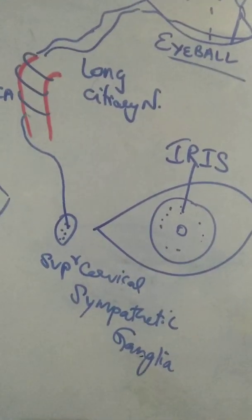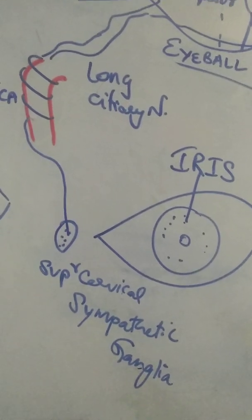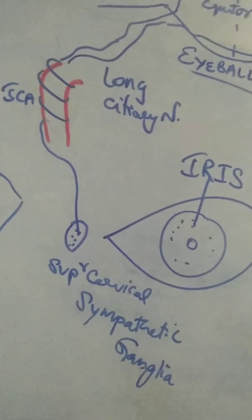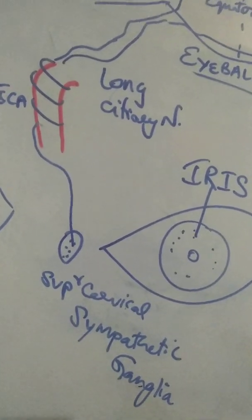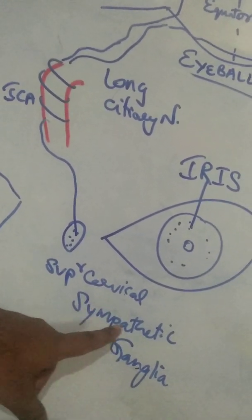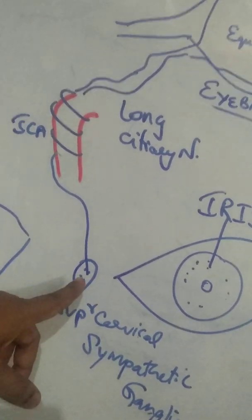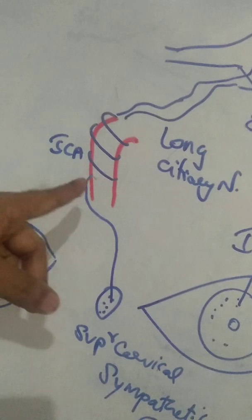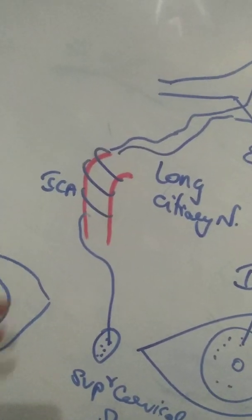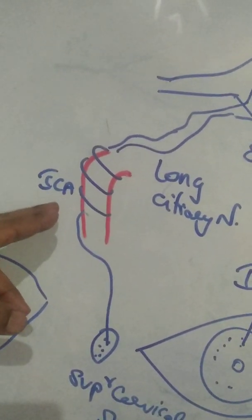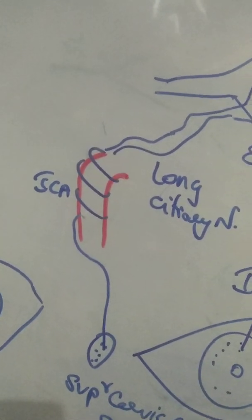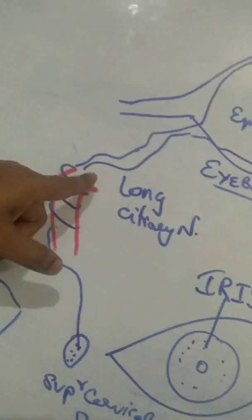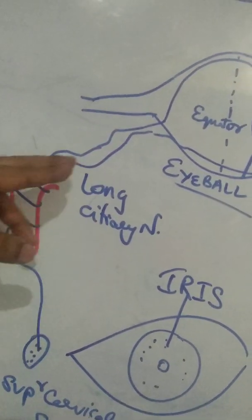Coming to the nerve supply: the neurons from the lateral gray horn of the T1, first thoracic spinal segment, travel and relay in the superior cervical sympathetic ganglion in the neck. This belongs to the sympathetic nervous system. From the superior cervical sympathetic ganglia, the post-ganglionic fibers wind around the internal carotid artery as the peri-arterial sympathetic plexus. The internal carotid artery passes through the carotid canal to reach the cranial cavity.